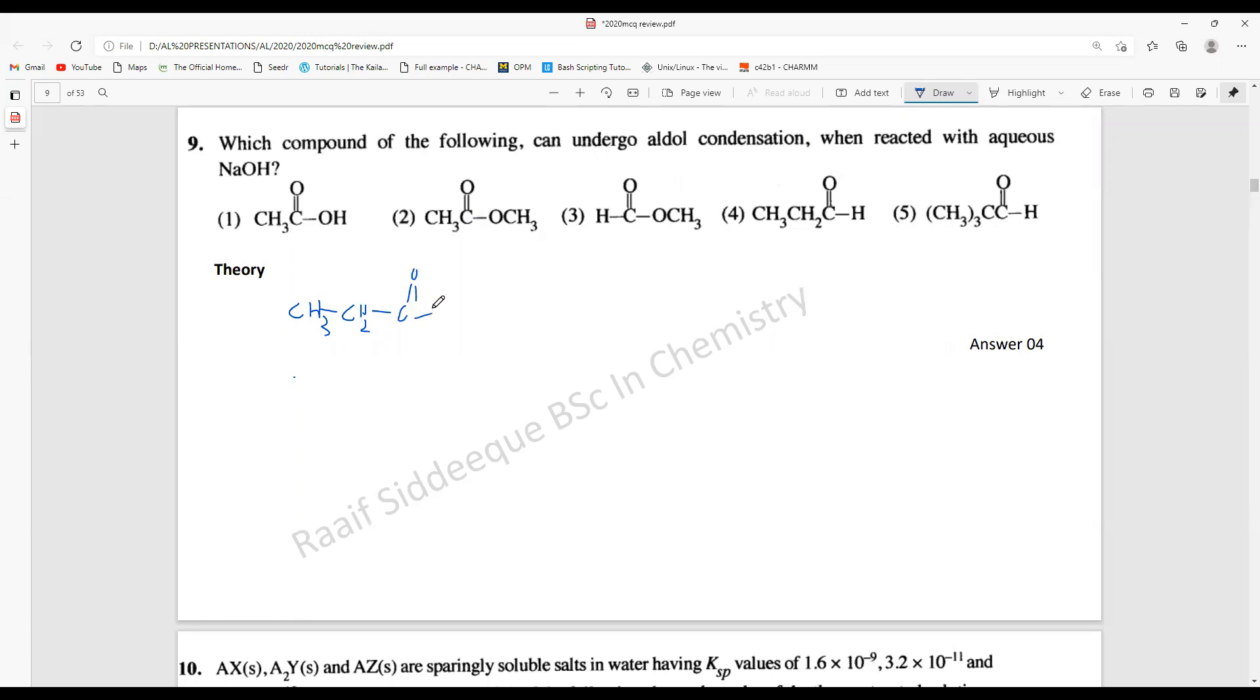This is a typical aldehyde. Here there is a CH2 group and these hydrogens are called alpha hydrogens. Normally how it happens: aldol condensation happens in the presence of NaOH.